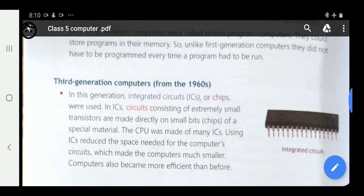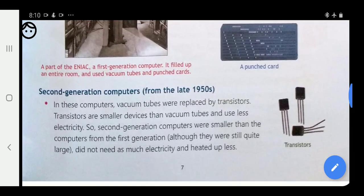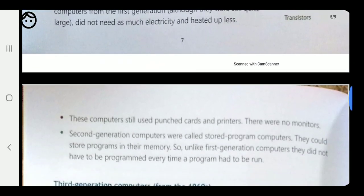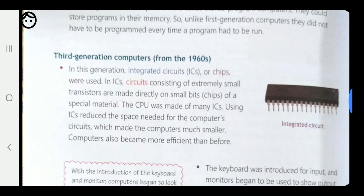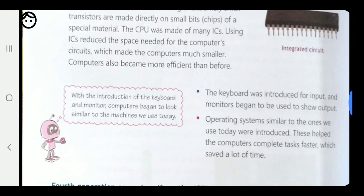The third generation replaced the vacuum tubes used in the first generation and the transistors used in the second generation. In the third generation, the circuits are very small in size and easy to use. The keyboard was introduced for input.